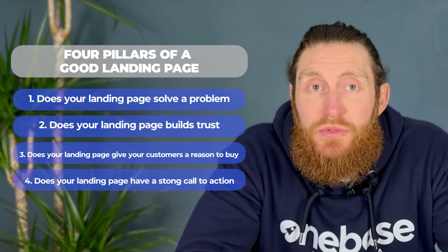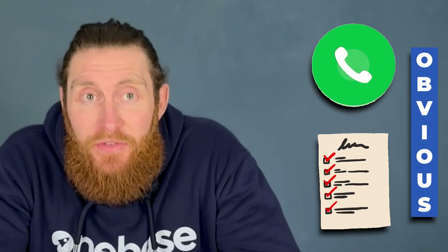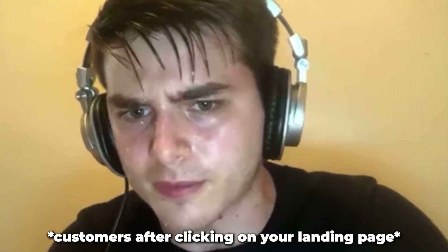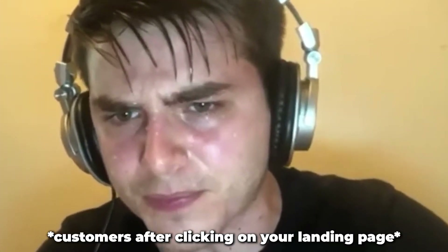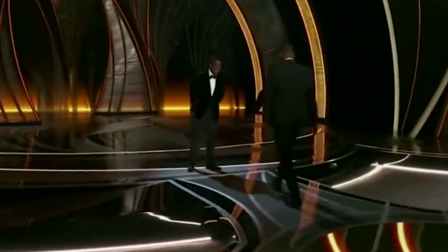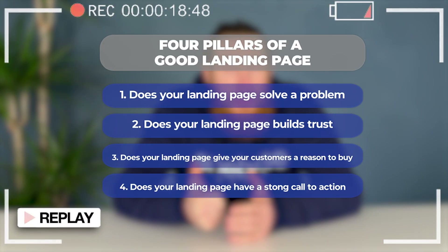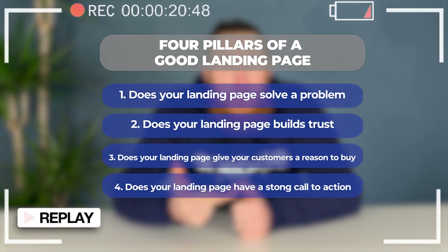The fourth pillar is a strong call to action. Your landing page must include a clear call to action, which is often overlooked. What should a customer do next — should they call you or fill out an inquiry form? It needs to be obvious. If your phone number and contact form are not prominently displayed and the customer has to scroll down or put in effort to find a way to contact you, they may choose to go back and find another business instead. Don't make the customer work to contact you. To recap: your landing page has to solve a problem, build trust, give a compelling reason to buy, and have a clear call to action.